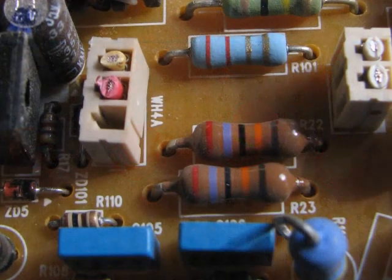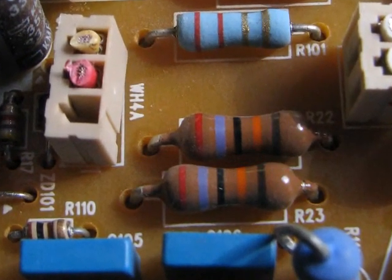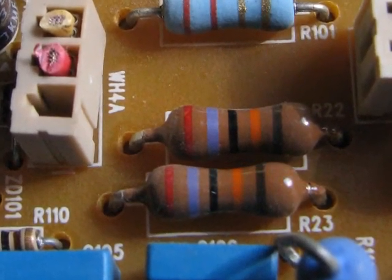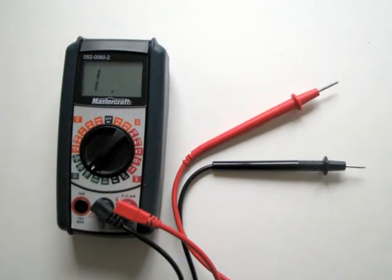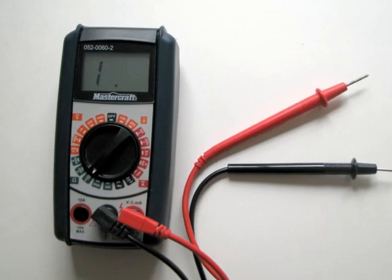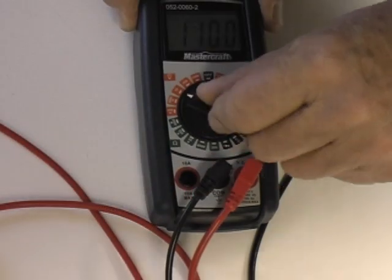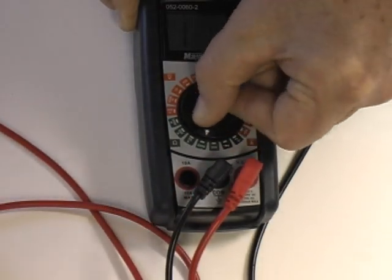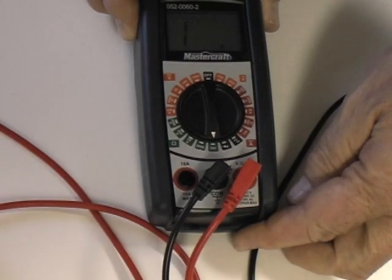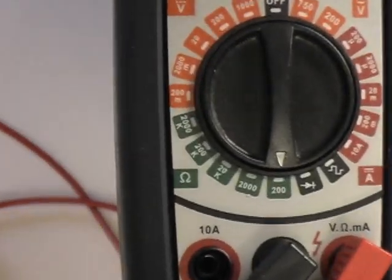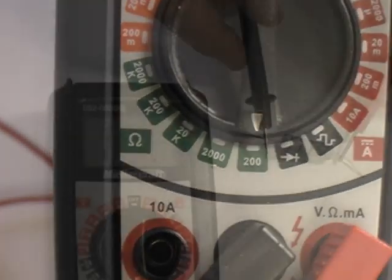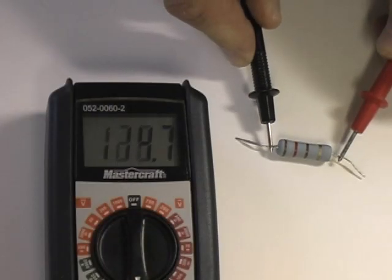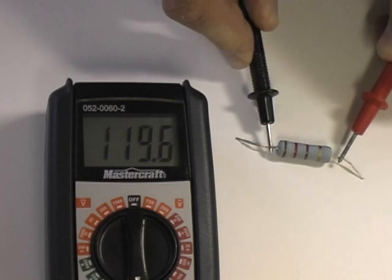Some resistors use additional color bands to indicate more precision. You can use a digital multimeter to directly measure the value of a resistor. Set the meter to measure resistance. Depending on your meter, you may have to select a range. For this example, I have chosen a range of 0 to 200 ohms. Once set, then touch the probes to each end of the resistor. The measured value is often slightly different from the value indicated by the color code.